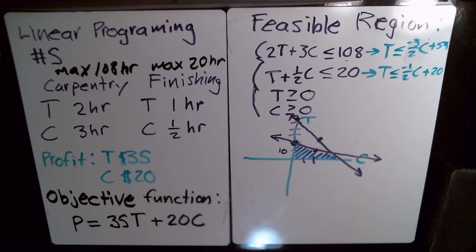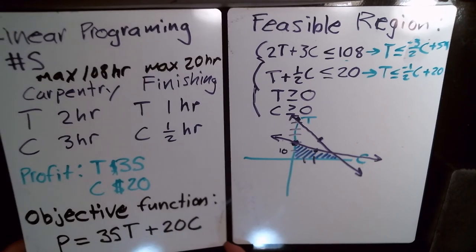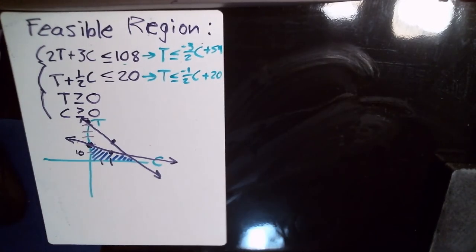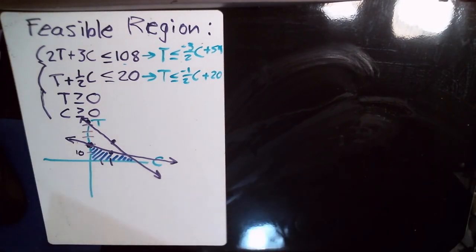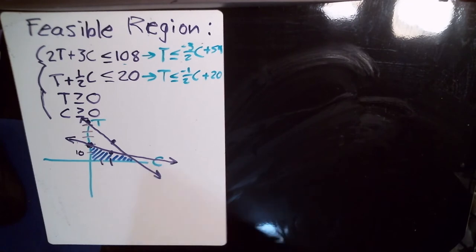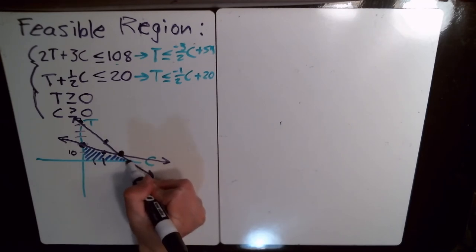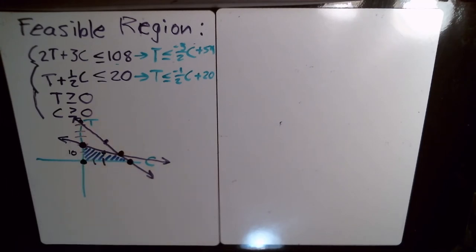Now we need to find the vertices — the corners of the feasible region — and figure out where the maximum profit occurs. The first vertex is just at the origin: (0, 0).